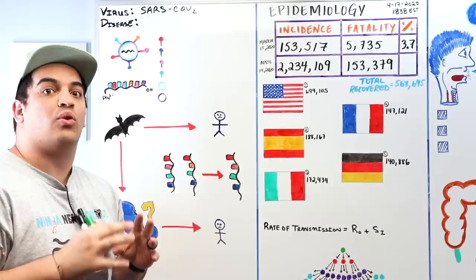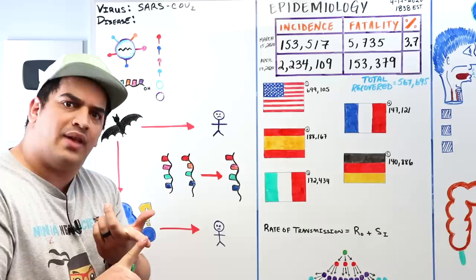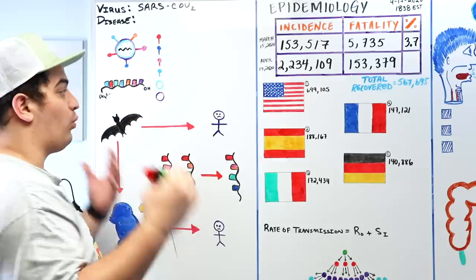SARS-CoV-2 is part of the coronavirus family, with an 80% genetic similarity to the coronavirus responsible for the SARS outbreak in 2002-2003 and the MERS outbreak in 2012. It is a beta coronavirus.